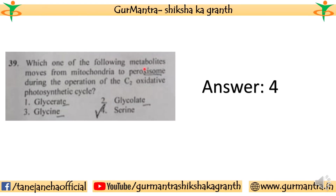Question 39: Which one of the following metabolites moves from mitochondria to peroxisome during the operation of the C2 oxidative photosynthetic cycle? The correct answer for this question is the fourth one — serine.